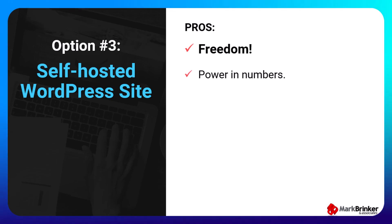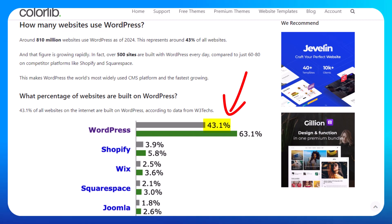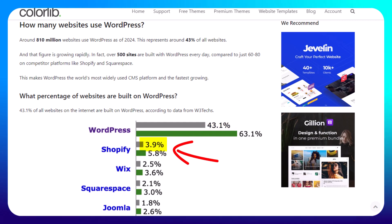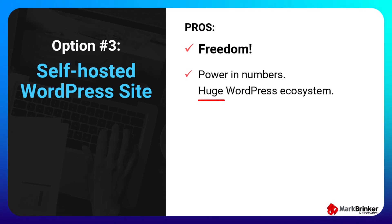I also like WordPress because there's power in numbers. WordPress is currently used by an estimated 800 million websites and blogs, which is about 43% of all websites on planet Earth. The closest competitor is Shopify at about 3.9%. That means there's a huge WordPress ecosystem in place containing tons of themes and tens of thousands of plugins, allowing you to customize your site any way you want. If you ever get stuck, there are plenty of experienced WordPress experts available for hire.